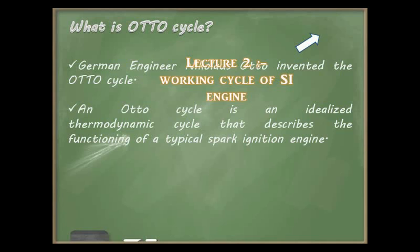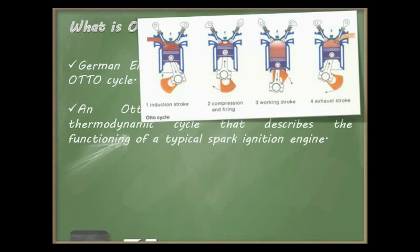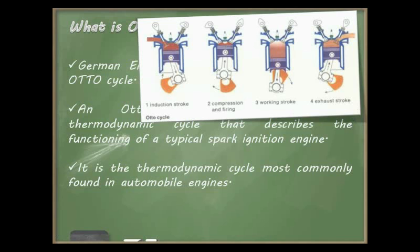A thermodynamic cycle of a four-stroke SI engine basically consists of four phases or strokes: induction stroke, compression stroke, working or expansion stroke, and exhaust stroke. This thermodynamic cycle is most commonly found in automobile engines.